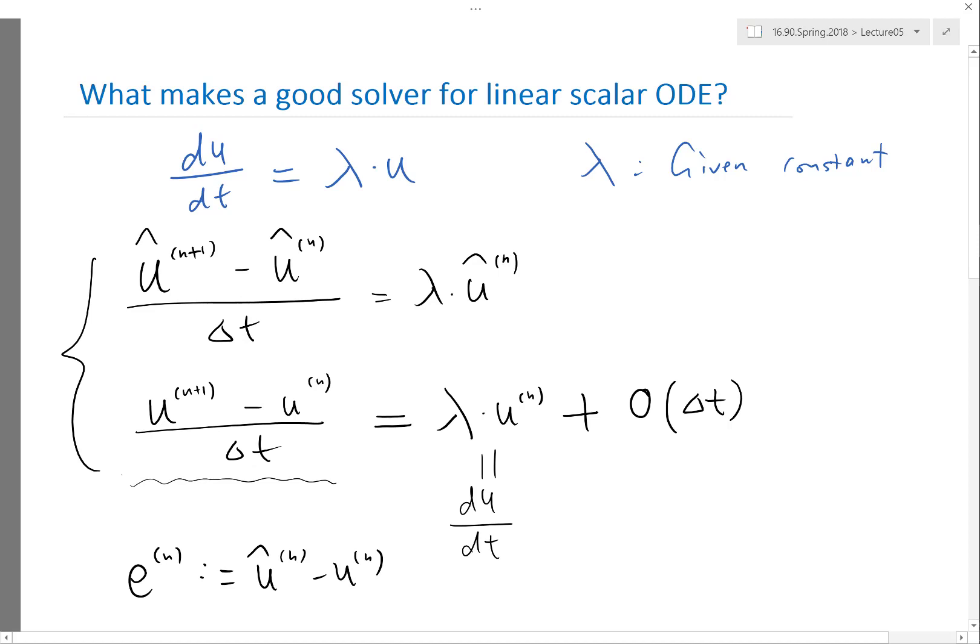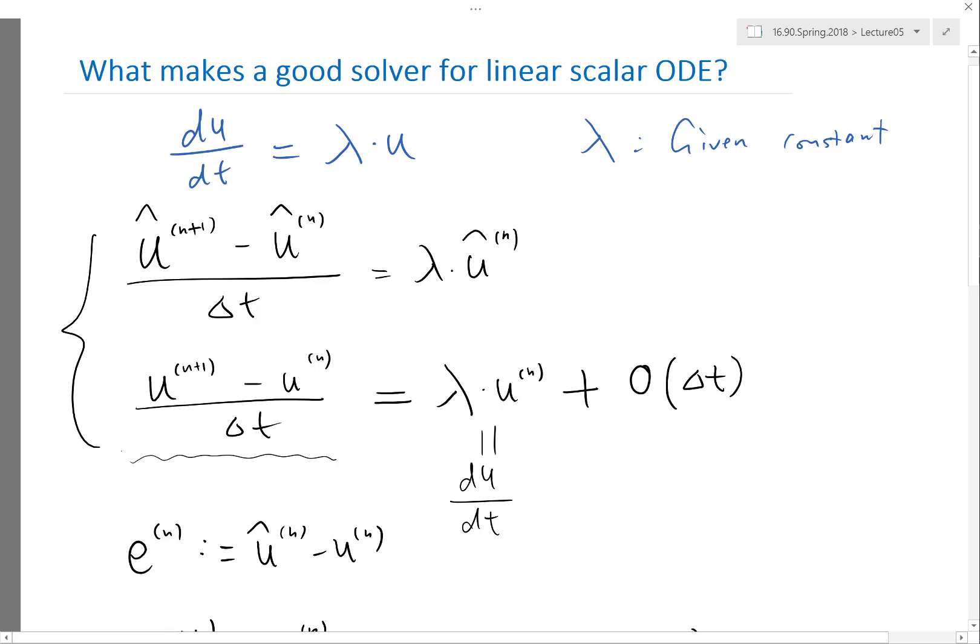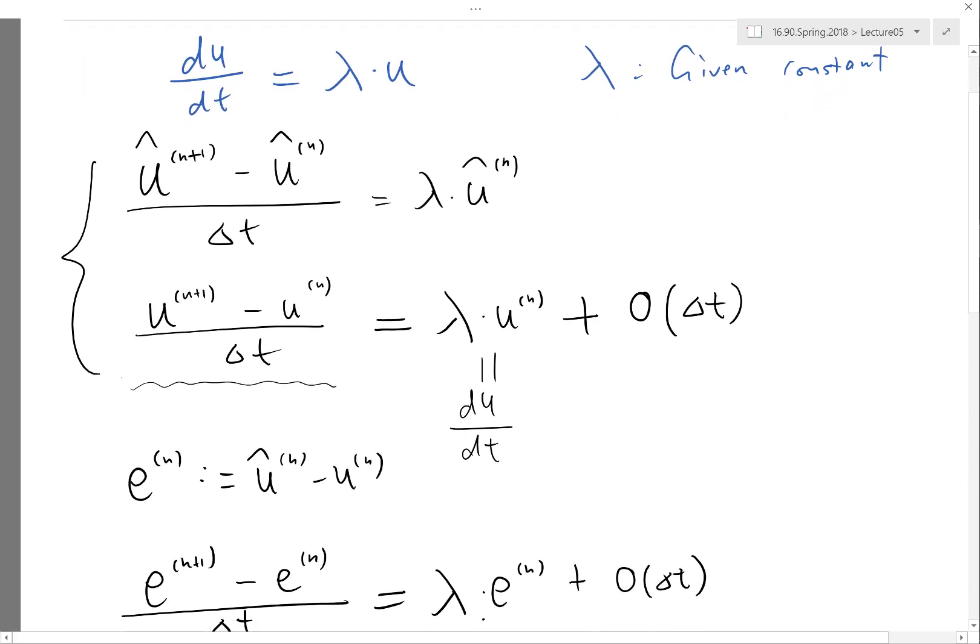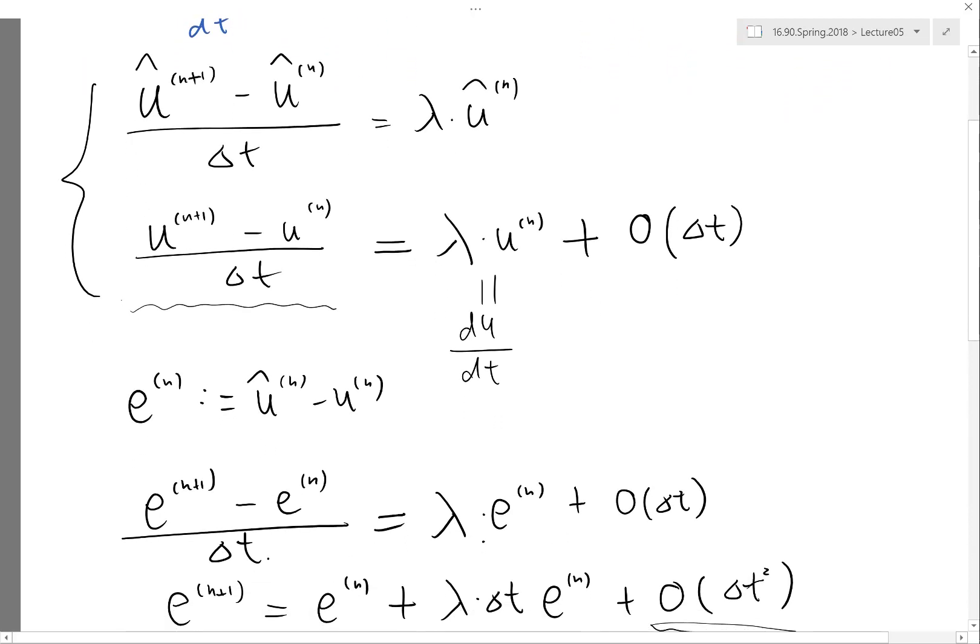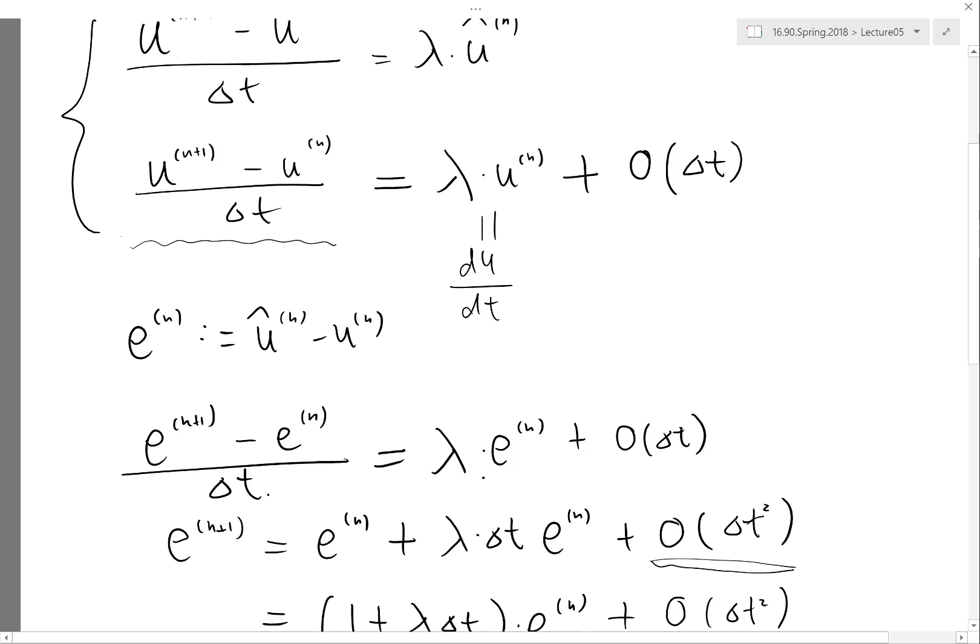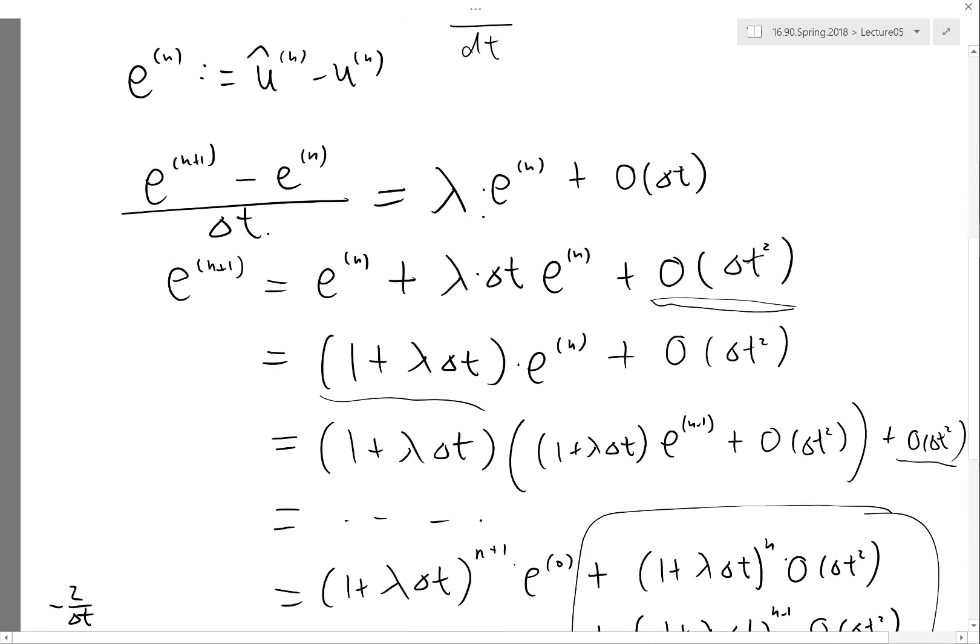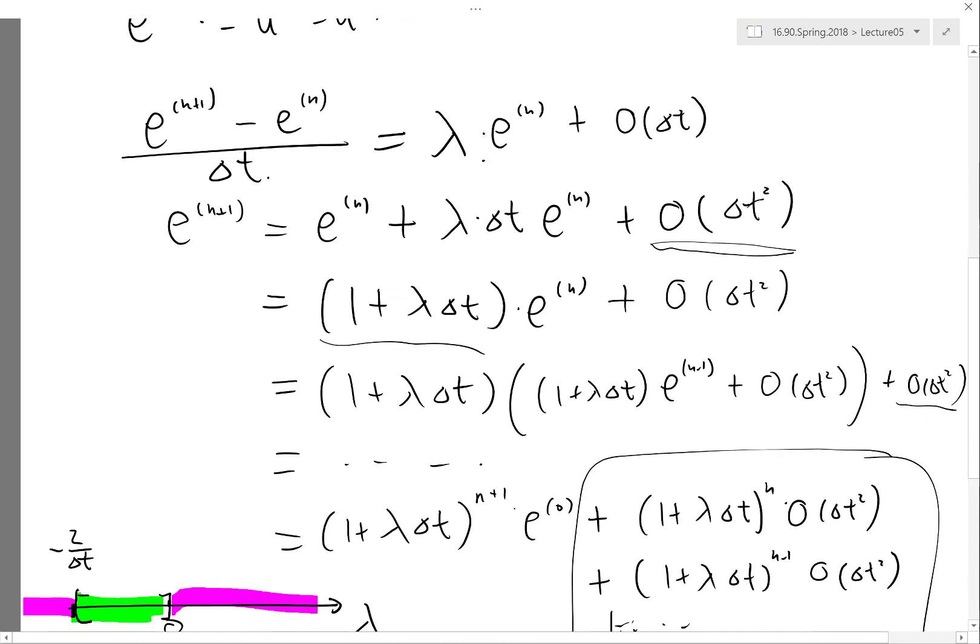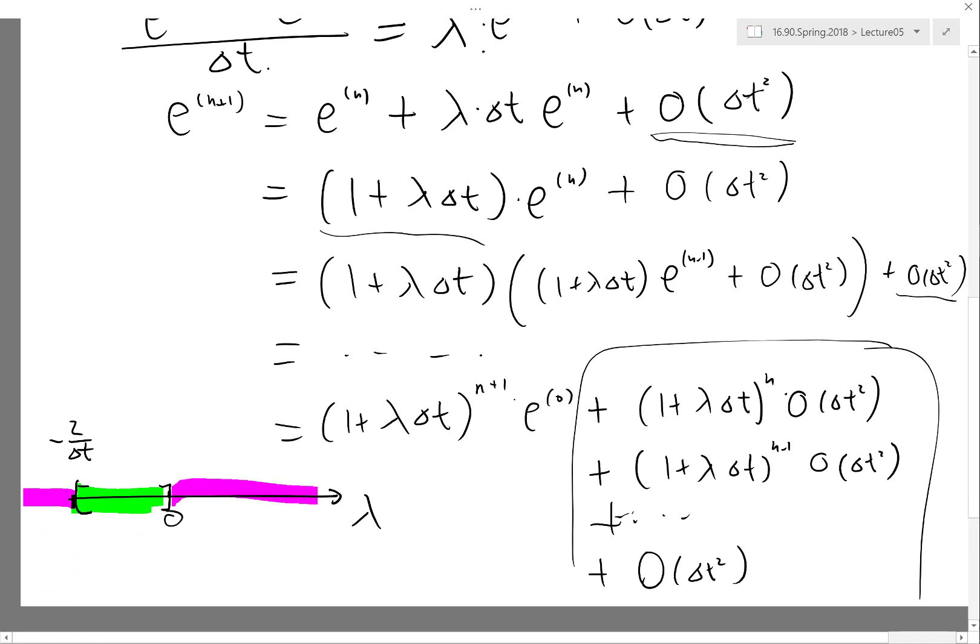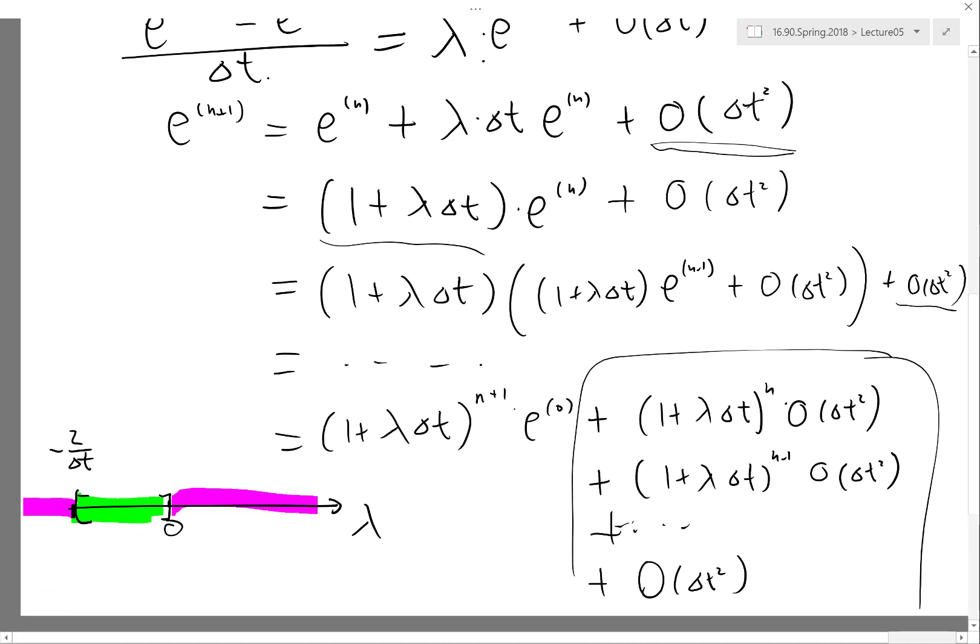So now if lambda is complex, you notice all these mathematics we are doing—the subtraction is going to work, the error now is going to be maybe a complex number, but this whole thing is going to work. The amplification factor now may become a complex number, but all the math we are doing actually applies not only to real lambdas but also to complex lambdas.